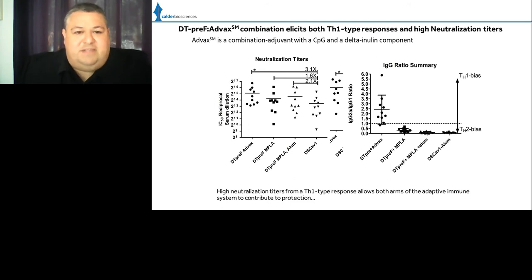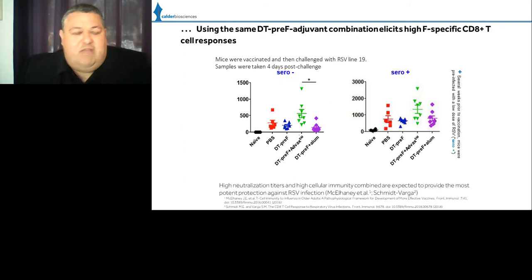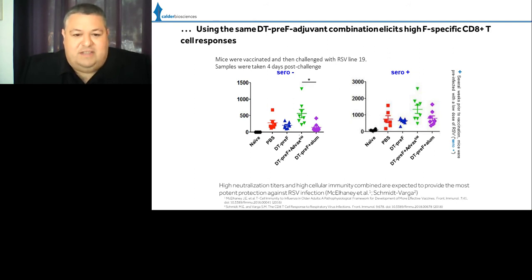Following further process development, we're now able to achieve a fourfold excess of our molecule when formulated on ADVAX compared to DS-CAV1. In agreement with the TH1 bias, we observed more F-specific CD8 T cells in both seronegative and seropositive animals, demonstrating balanced recruitment of TH1 and TH2-type responses when neutralization data is coupled with T cell analysis.